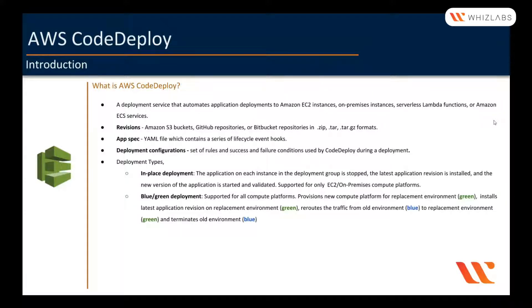This way, the environment which is serving traffic to users will remain untouched. You can also choose when to switch the traffic to the replacement environment, and if there is any issue, you can roll back to the old environment without terminating it. The blue-green pattern is an important architectural concept many organizations follow these days to effectively deploy without bringing down any services.